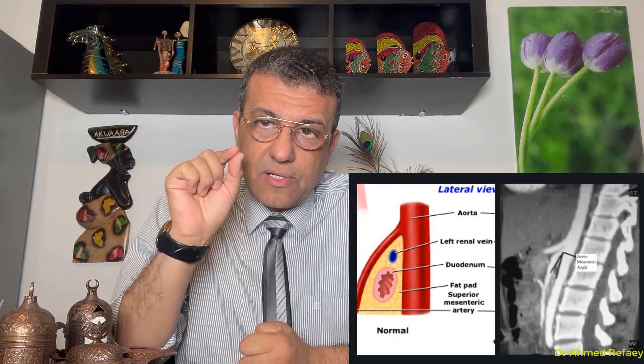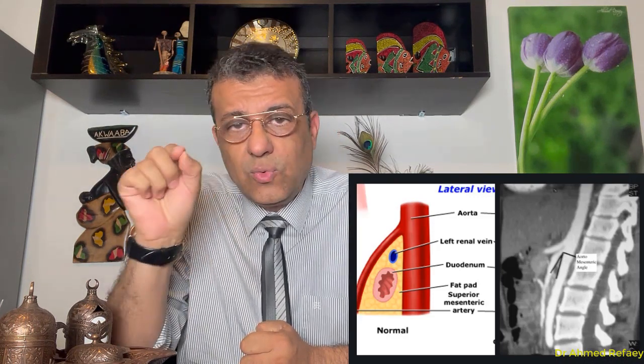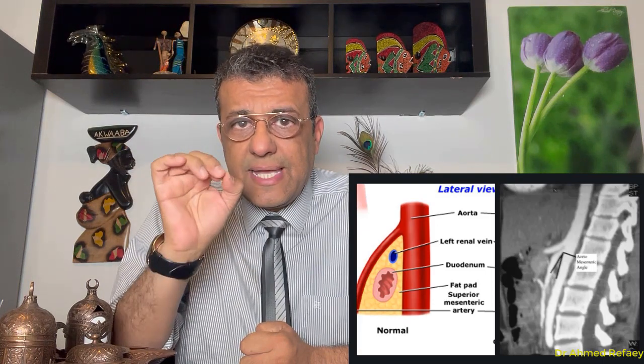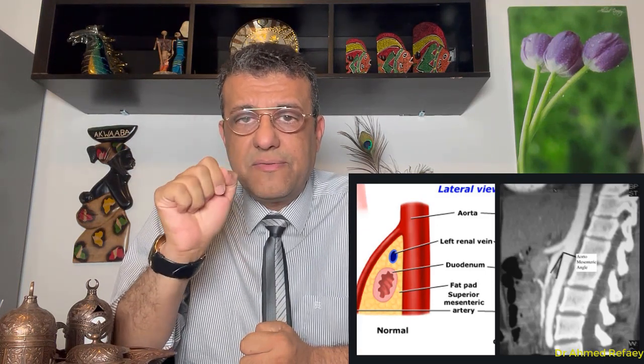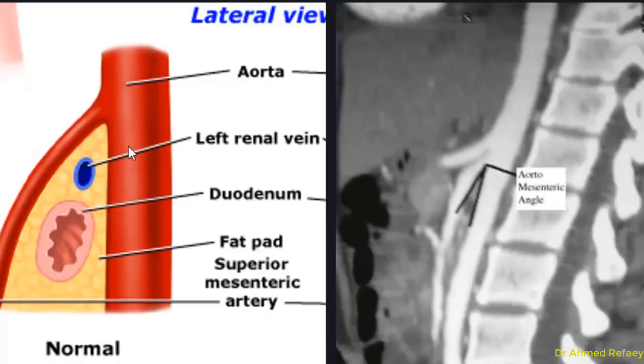This talk is about Nutcracker Syndrome and Superior Mesenteric Artery Syndrome. In normal anatomy, the angle between the aorta and the superior mesenteric artery ranges from 25 to 60 degrees. This angle is preserved by the presence of mesenteric fat. As seen in this image, the aorta and superior mesenteric artery are separated by mesenteric fat, and two structures pass within this angle: the left renal vein and the duodenum — specifically the third part of the duodenum.